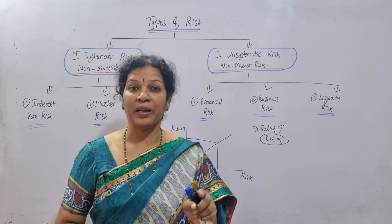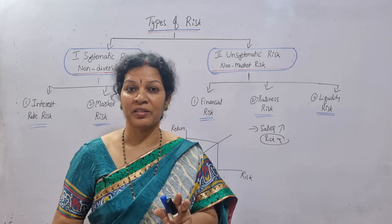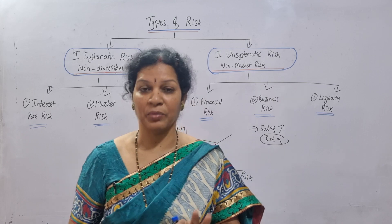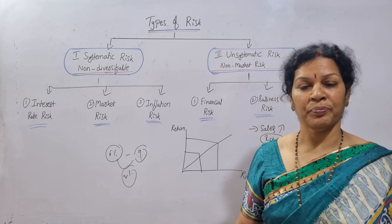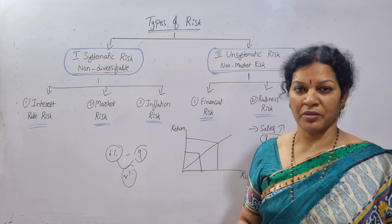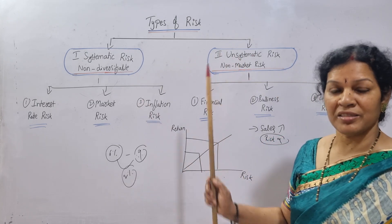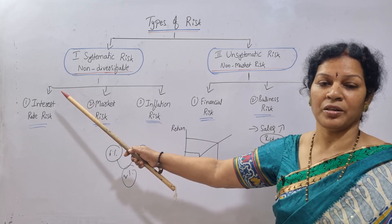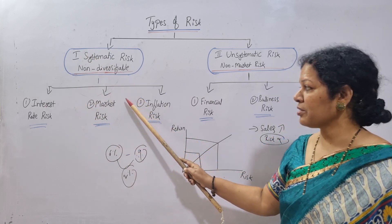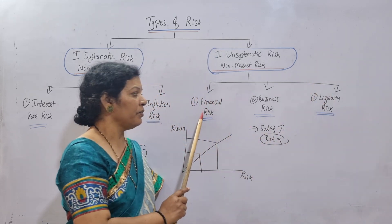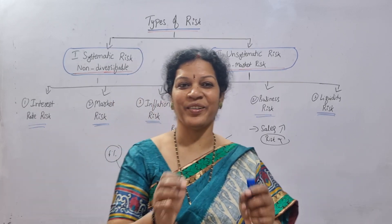To overcome this, they have to plan strategies — if they plan and implement properly, they can survive. Let me give a recap: total risks are of two types — systematic and unsystematic. Systematic is not in the hands of the organization; it's based on socio-economic, market, and government conditions — uncontrollable. Unsystematic is in the hands of the organization — controllable. Under systematic: interest rate risk, market risk, and inflation risk. Under unsystematic: financial, business, and liquidity risk.